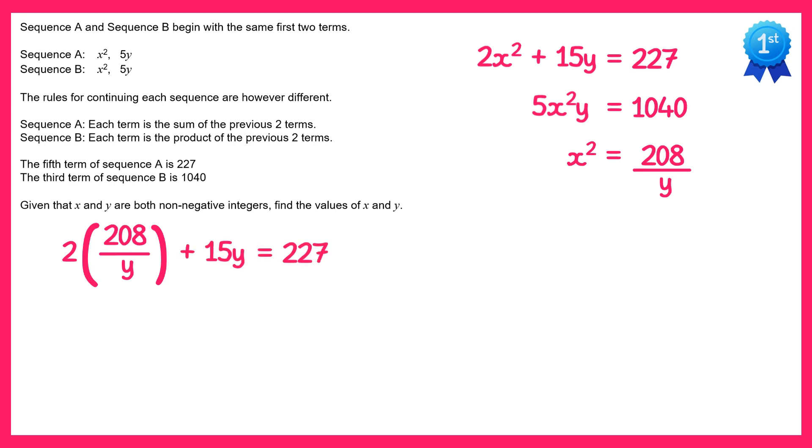I can write the first term here as a single fraction by multiplying the 2 and the 208 to get 416 over y, and now if I multiply all terms by y I get 416 plus 15y squared equals 227y.